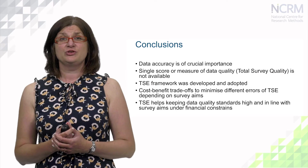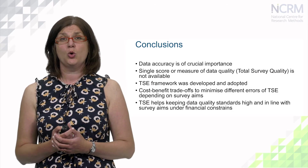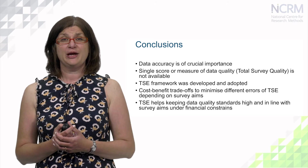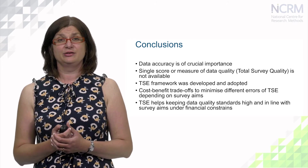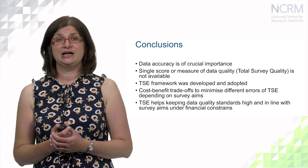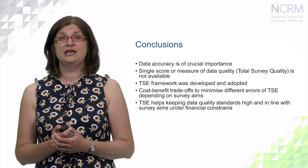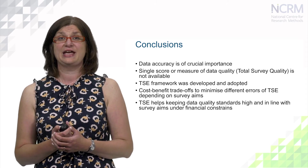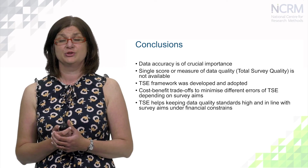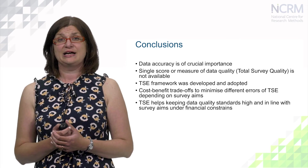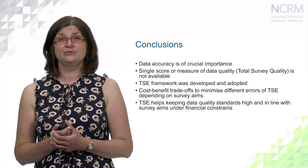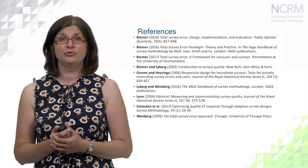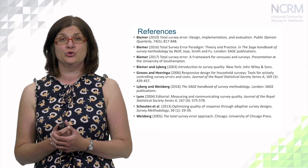In conclusion, data accuracy is of crucial importance. A single score or measure of total survey quality is not available; however, the total survey error framework with the mean squared error metric was developed and adopted, and it is very helpful for statistical organizations when considering cost-benefit trade-offs to minimize different errors depending on survey aims and available funding. Total survey error helps keep data quality standards high in line with survey aims and under financial constraints.